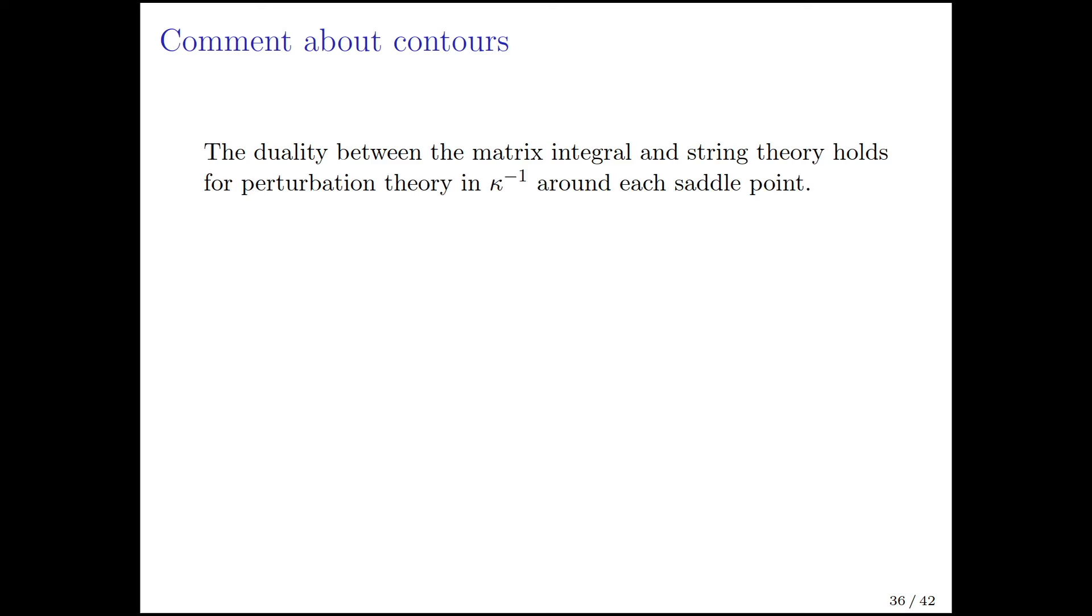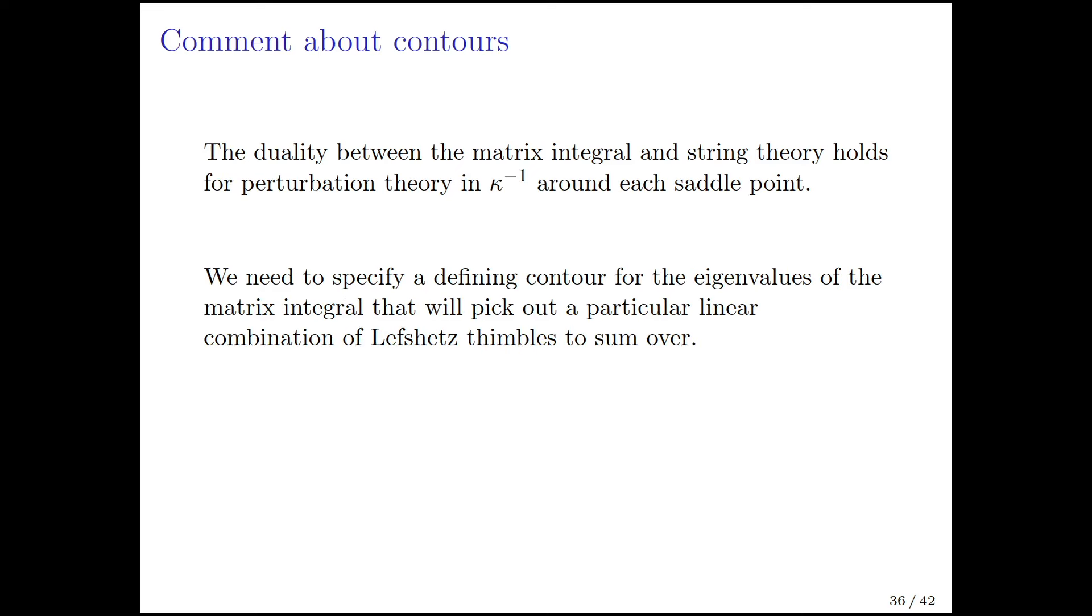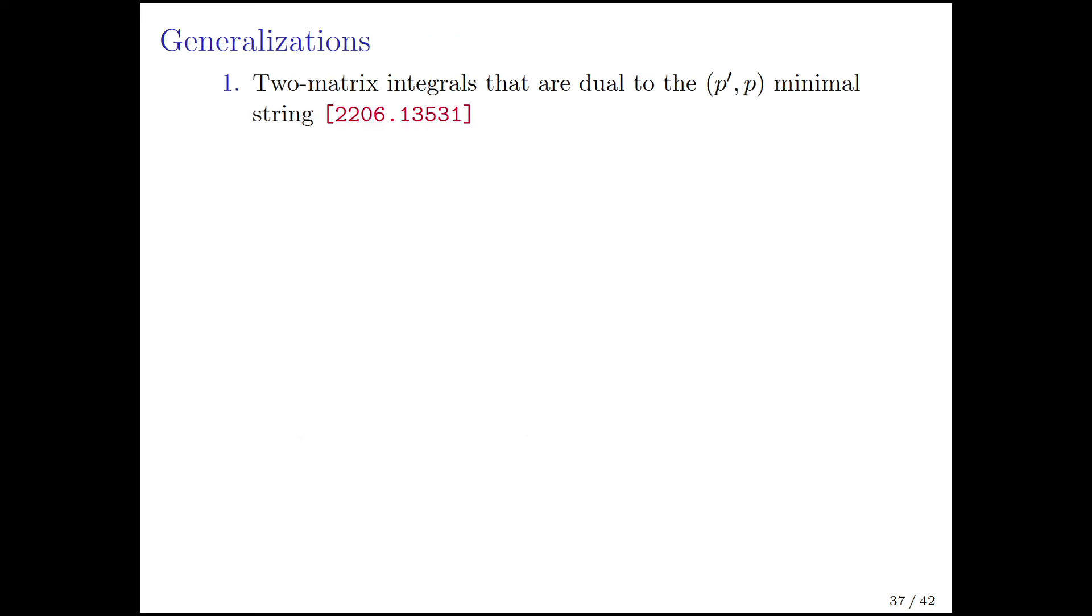There's a comment about contours. It seems that if we restrict ourselves to these eigenvalue instantons, the duality between matrix integral and string theory holds for perturbation theory in 1 over kappa around each saddle point. We need to specify a defining contour for the eigenvalues that will pick out a particular linear combination of the Lefschetz thimbles that we need to sum over. The string theory also needs a corresponding defining contour in the complex plane of this open string tachyon. In some sense, after you've matched the thimbles one by one, the contour is a choice that you get to make once on both sides.